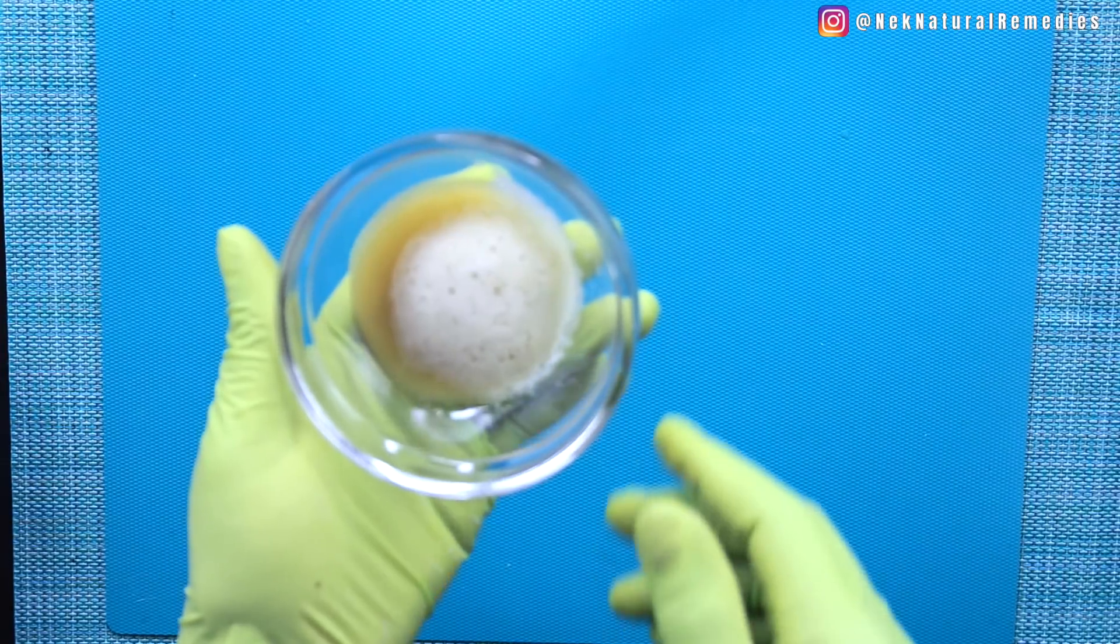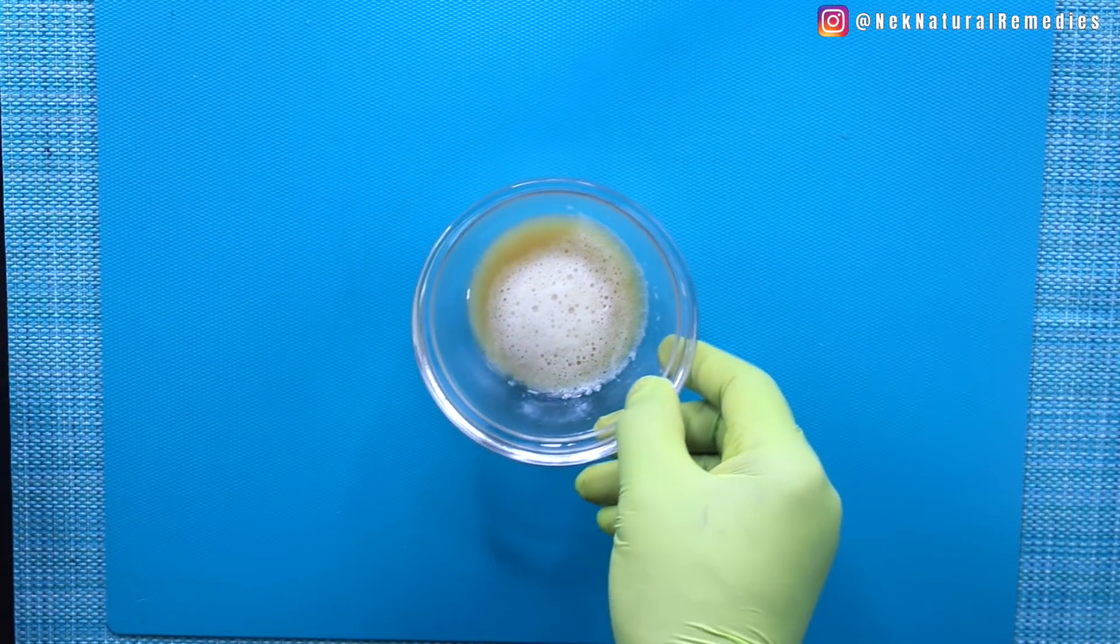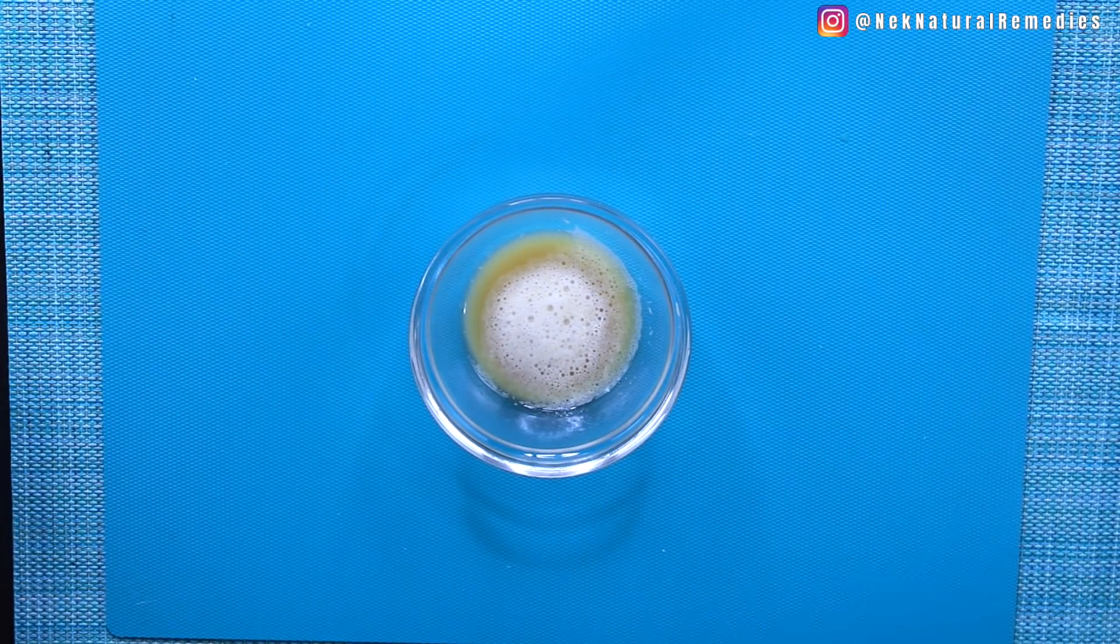So after straining, this is the juice. What you have to do is cover it and set it aside and let's get our next ingredient.